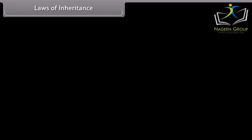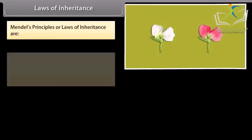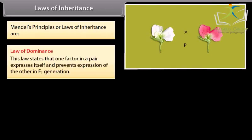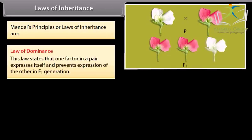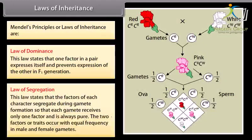Laws of inheritance. Mendel's laws of inheritance are: Law of Dominance — one factor in a pair expresses itself and prevents expression of the other in the F1 generation. Law of Segregation — the factors of each character segregate during gamete formation so that each gamete receives only one factor and is always pure; the two factors occur with equal frequency in male and female gametes.